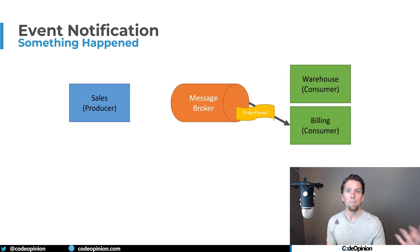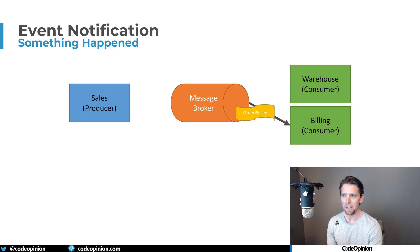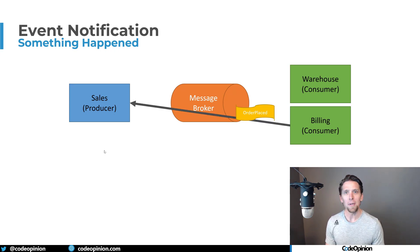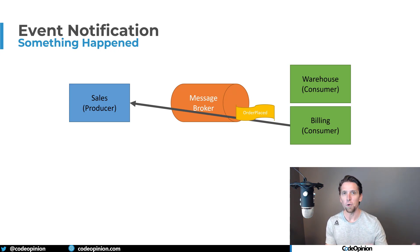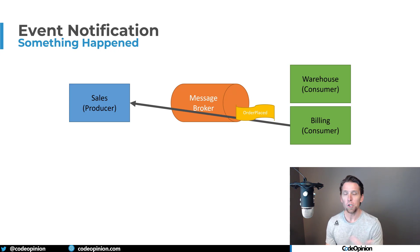From there, maybe billing cares about that particular event. But this is how notification events relate to event-carried state transfer: if no data is actually in the event and a consumer wants to update a local cache copy, they end up making an RPC call back to the producer — sales — to get more data about that particular order. But then you're in the same problem again of not being able to update your local cache copy if there's an issue with sales — is it available, is it up, are there latency issues? That's how people often transition from notification events into event-carried state transfer.